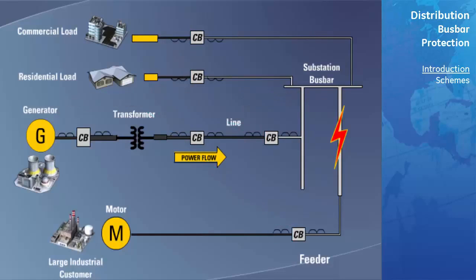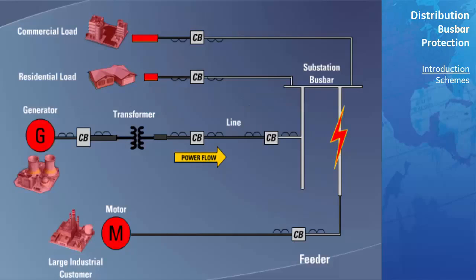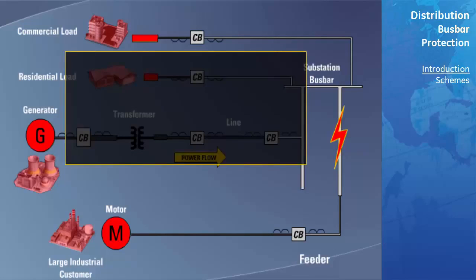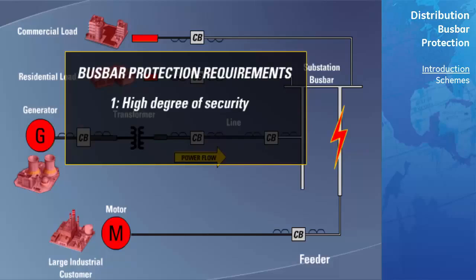A false trip of a distribution bus can cause outages to a large number of customers, as numerous feeders as well as sub-transmission lines may be disconnected. A false trip of a transmission bus bar may drastically change system topology and jeopardize power system stability. Hence, one of the requirements of bus bar protection is a high degree of security. On the other hand, bus faults generate large fault currents. If not cleared promptly, they endanger the entire substation due to both dynamic forces and thermal effects. As a result, the second requirement of bus protection is that of high speed operation. With both security and dependability being very important for bus bar protection, the preference is always given to security.